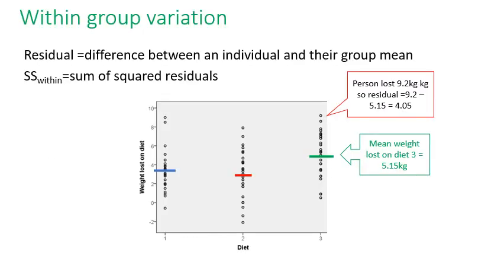Looking at the residuals — the difference between individual and group mean — this represents the within-group component of variation.